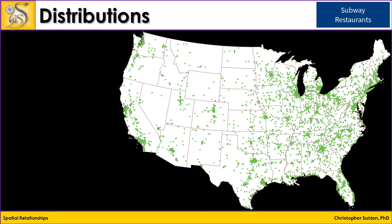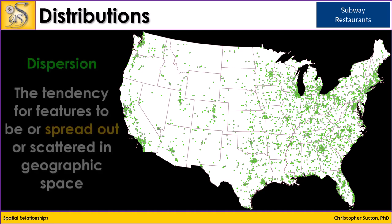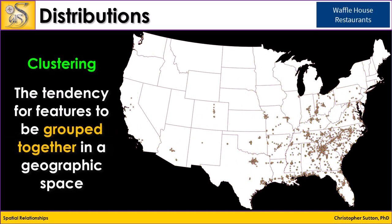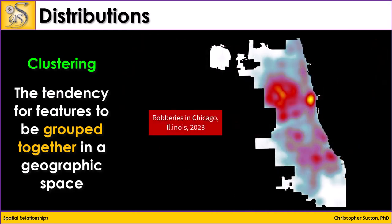Distribution is an important spatial relationship. When we look at distributions, we look at whether things are dispersed — meaning features are spread out or scattered across geographic space. Here we see a map showing the location of Subway restaurants distributed across the contiguous United States. Clustering refers to grouping objects based on their spatial proximity or similarity, helping identify areas where features are concentrated. Here we see a map of Waffle House restaurants, with clear clusters in the southeastern United States. Clustering can also be applied to crime analysis to identify trends, anomalies, or significant groupings.